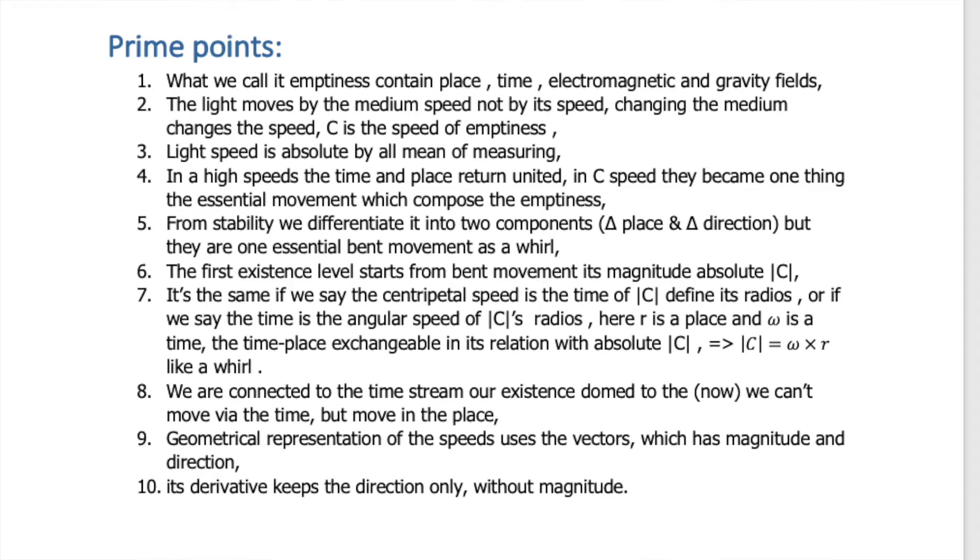This change happens without any acceleration, which means it is not the speed of light itself. Also, when light reflects and returns, it returns at the same speed without any acceleration — it stops and changes direction. So it is not the speed of light; it is the speed of the medium. Third point: light speed is absolute by all means of measuring.